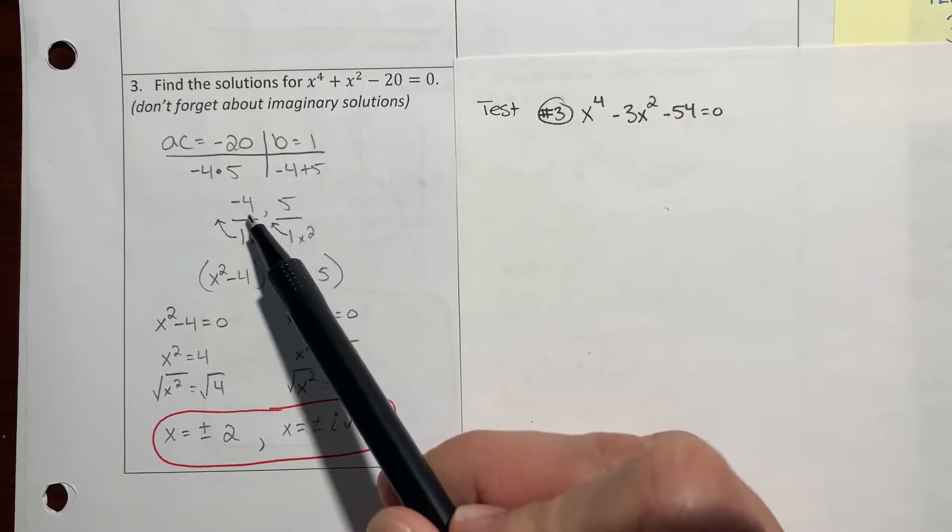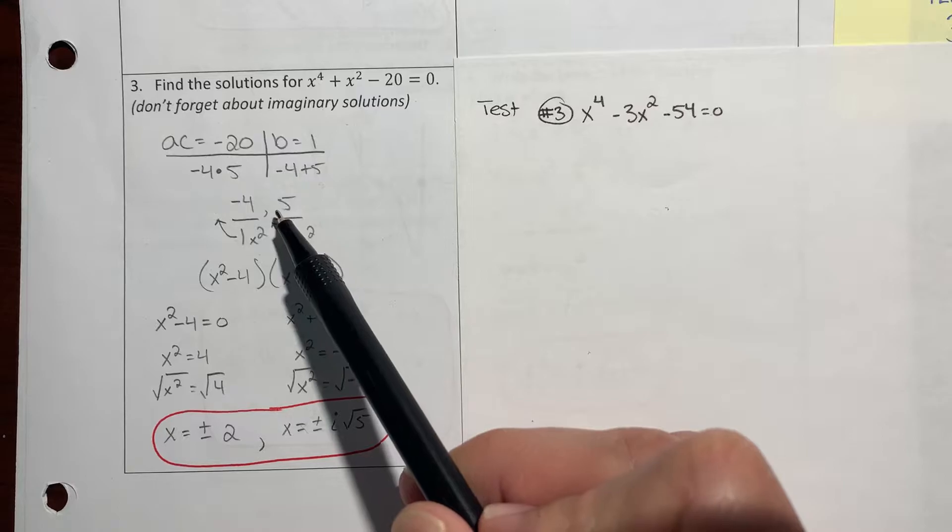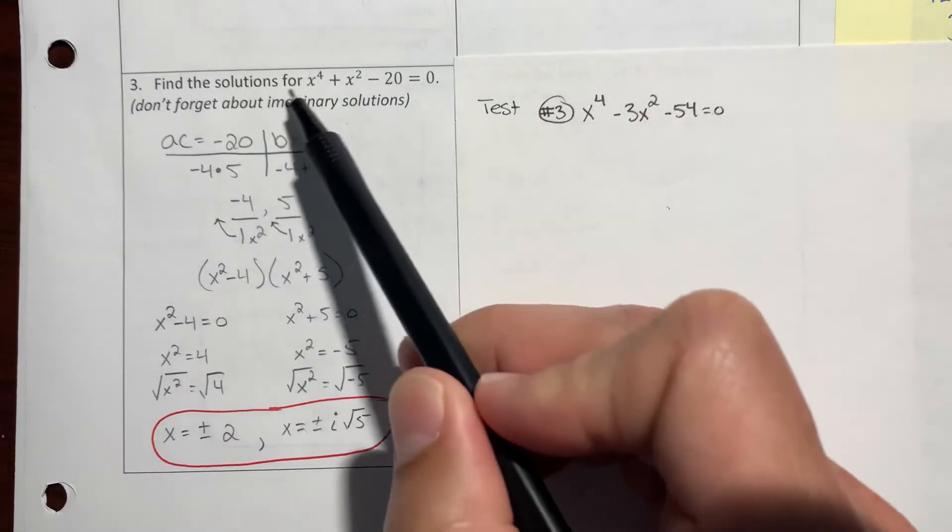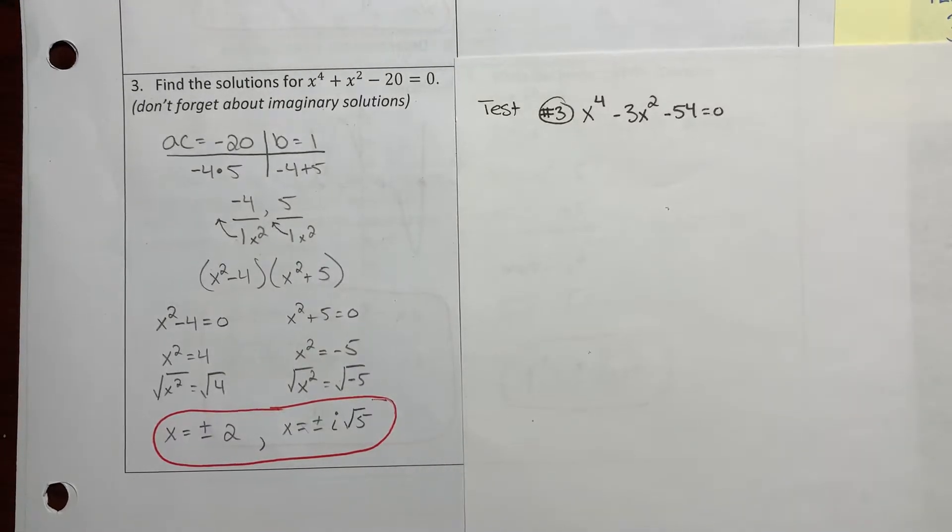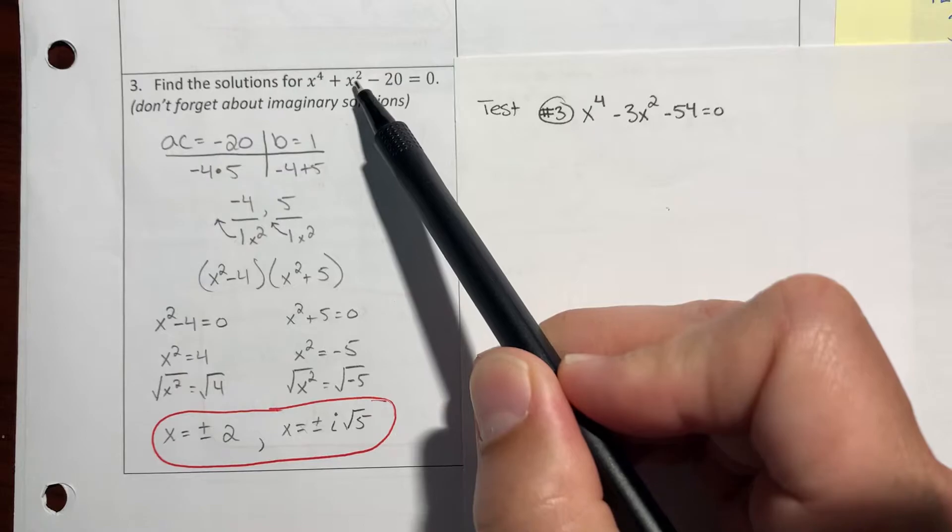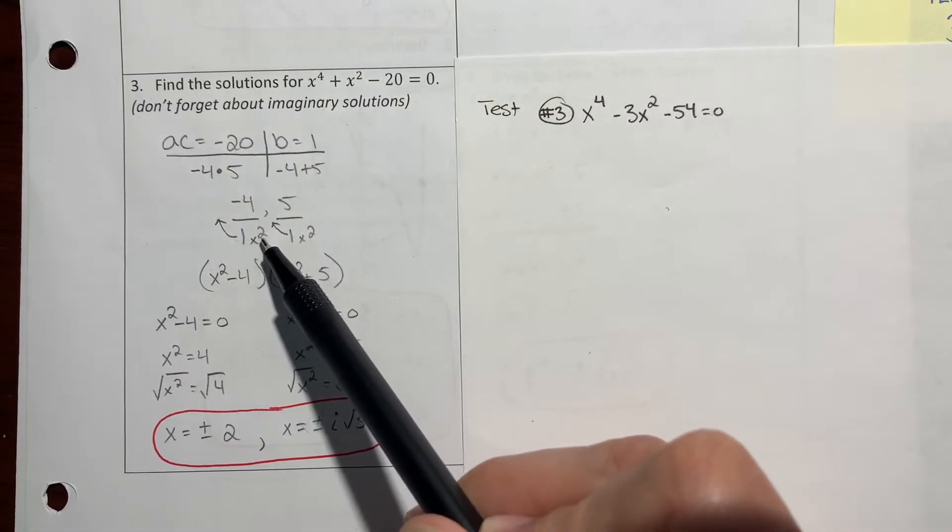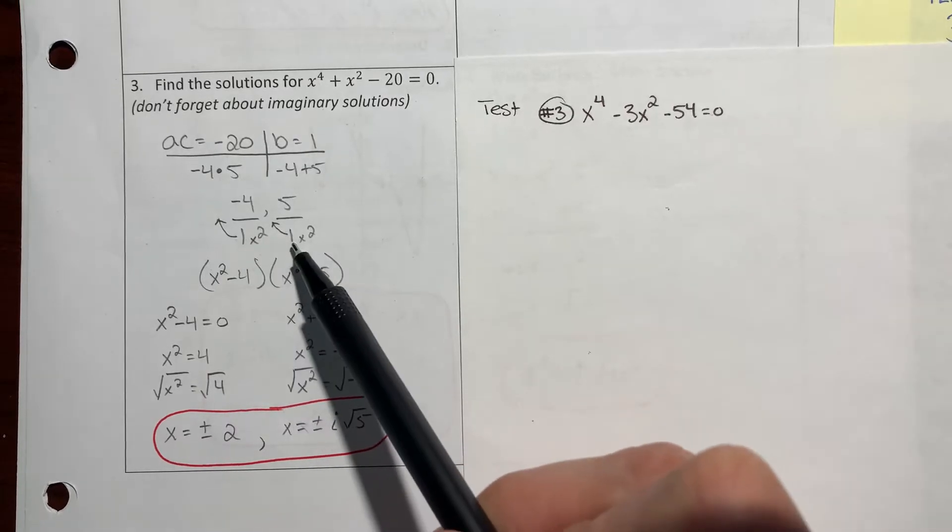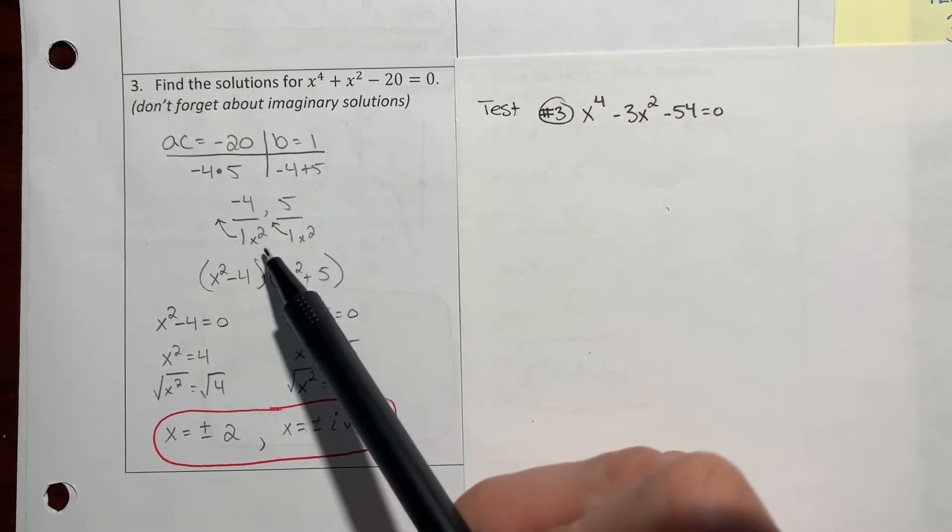I divide each one of those factors by the a value which was 1. Then you actually write the middle variable there, the x squared. So I divide by the a value which is 1 for both of them and I put the x squared next to it.